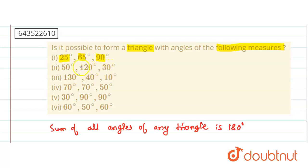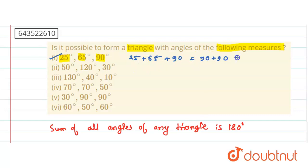So now let us take the first case: 25 plus 65 plus 90. 25 plus 65 is 90, and 90 plus 90 is 180. So it is possible to form a triangle with this first set of angle measures.